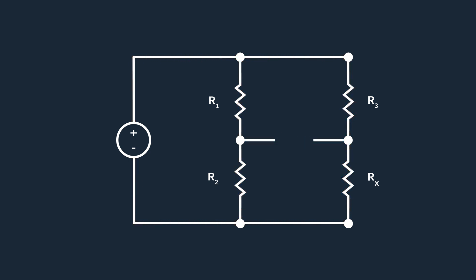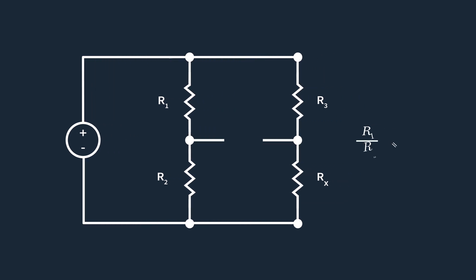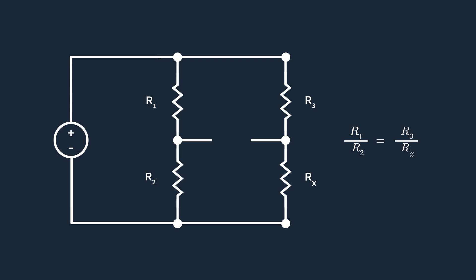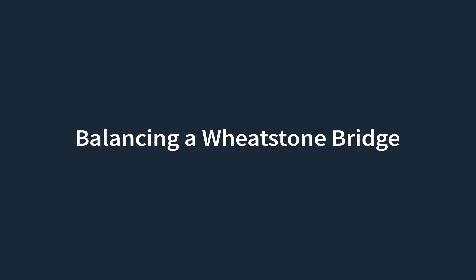Since the voltage is the same in both branches of the Wheatstone bridge, the ratio of the two resistances on one side of the bridge is equal to the ratio of the two resistances on the other side. Here, R1 and R2 are known resistors, R3 is another known resistor, and Rx is the unknown resistance to be determined. When the bridge is balanced, the unknown resistance Rx can be calculated using the known resistances R1, R2, and R3. So let's do an example using this equation to calculate the unknown resistance.